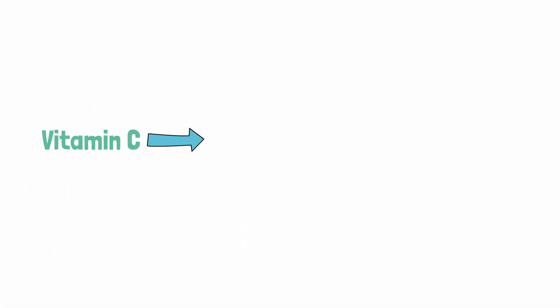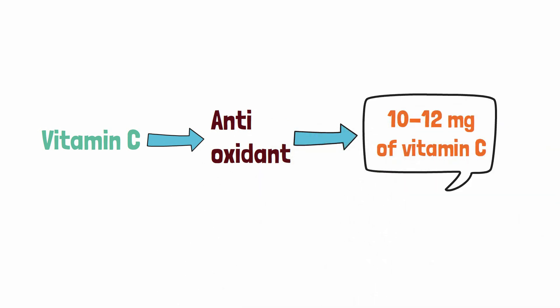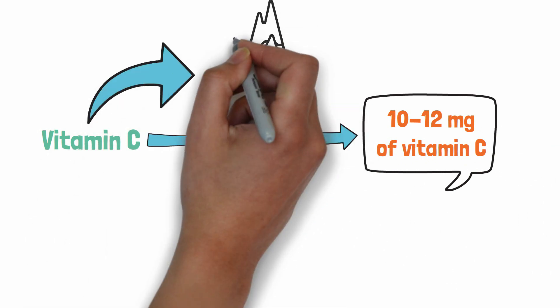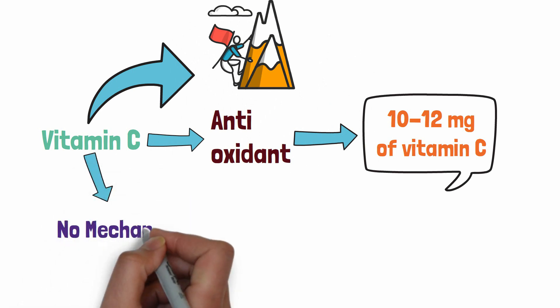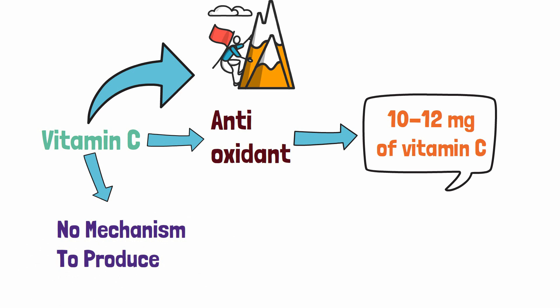Vitamin C is a very important type of antioxidant present in jackfruit. 10 to 12 milligrams of vitamin C is present in every 100 grams of sliced jackfruit. Vitamin C is perhaps the most important vitamin for developing a good immune system, but there is no mechanism inside our body which can produce vitamin C.